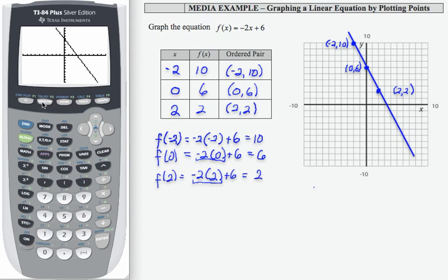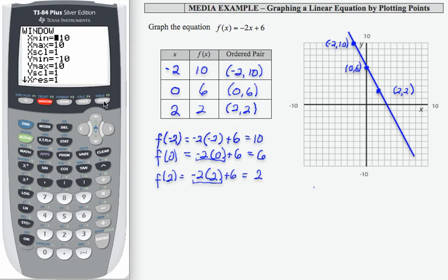So notice if I go back to my window here, my x min and max, negative 10 to 10. My y min, negative 10 to a max, y max of 10. And my graph then does indeed look very much like what I have here.